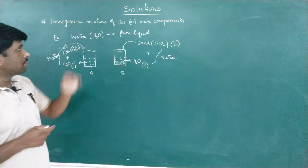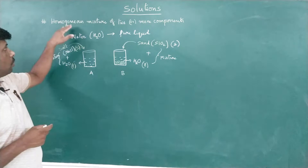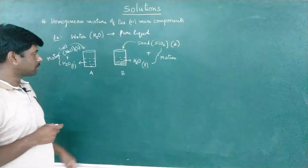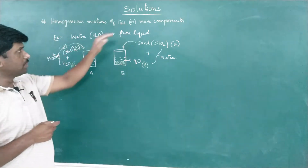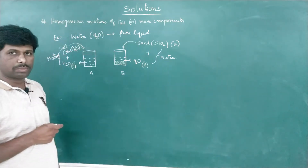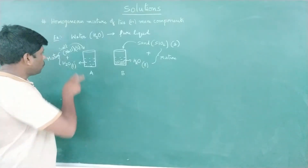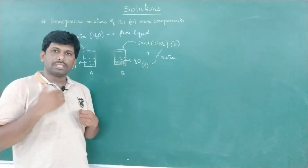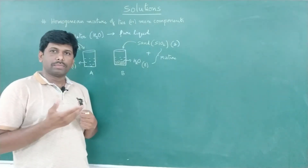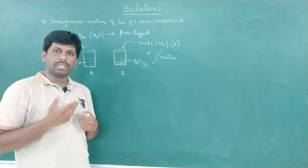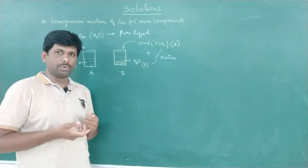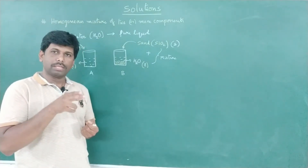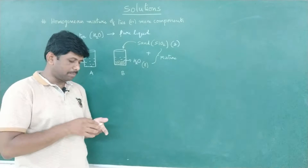So basically, a solution is a homogeneous mixture of two or more components. At least two components must be present. They may be present in the same quantity or in different quantities, which is why we name them differently.